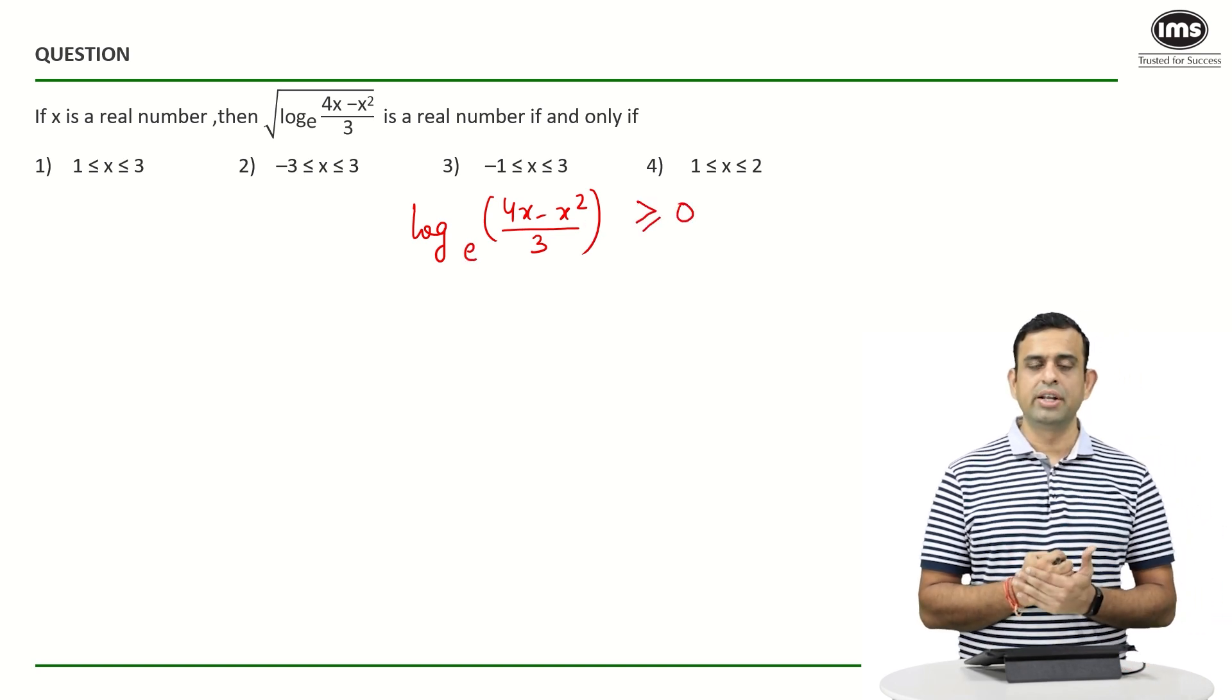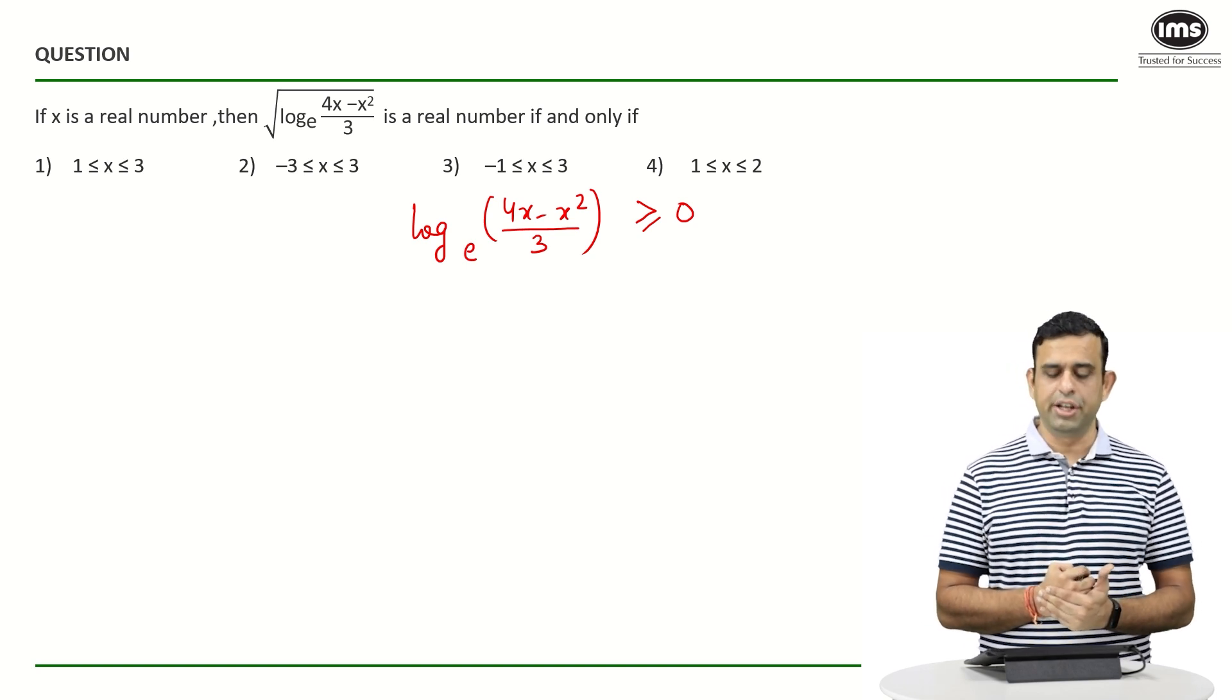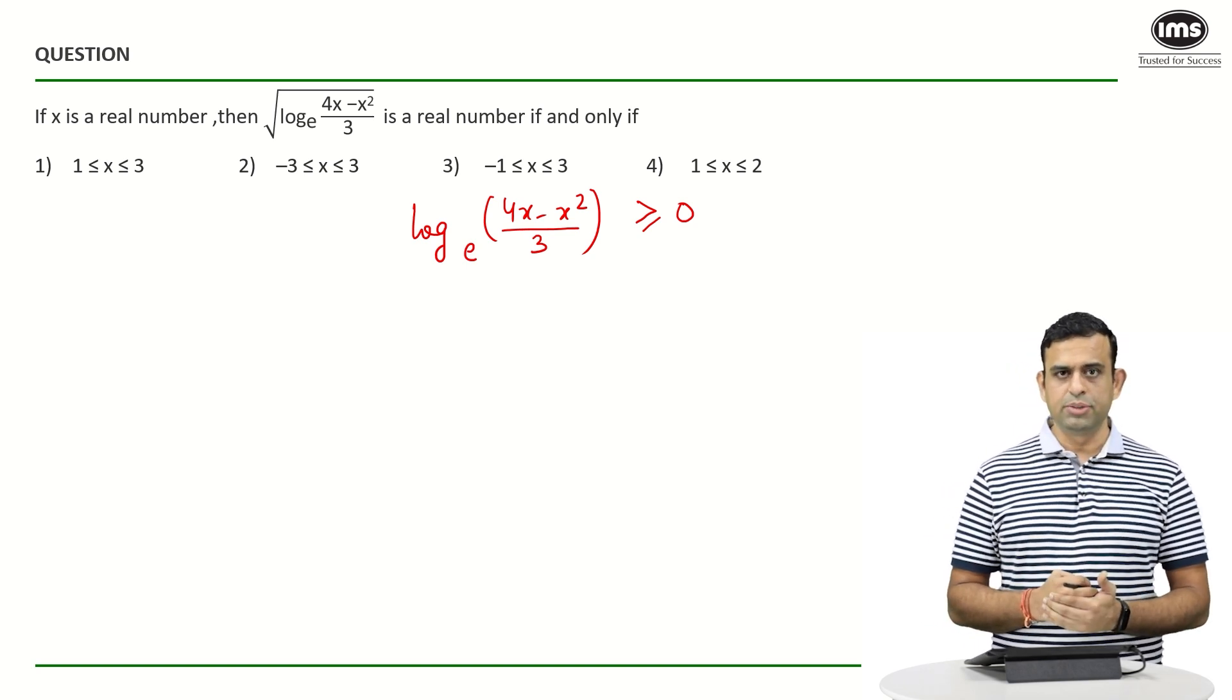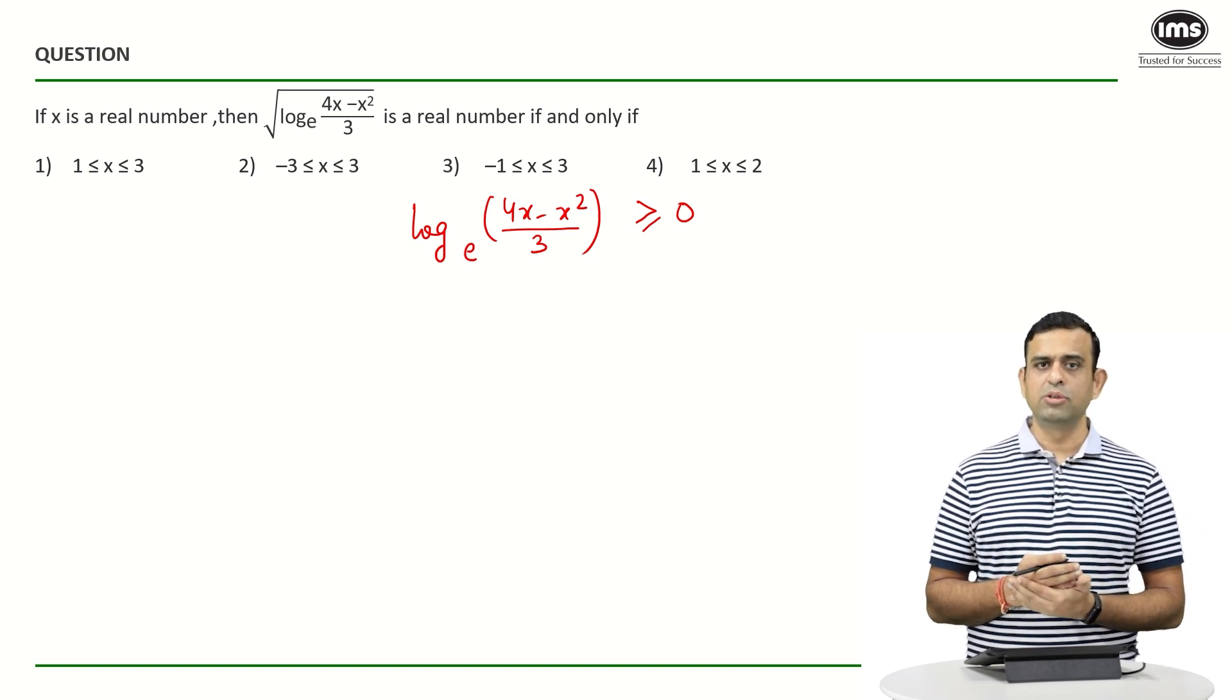What about the next possible step? The next possible step will be, as we know that log of 1 happens to be equals to 0.